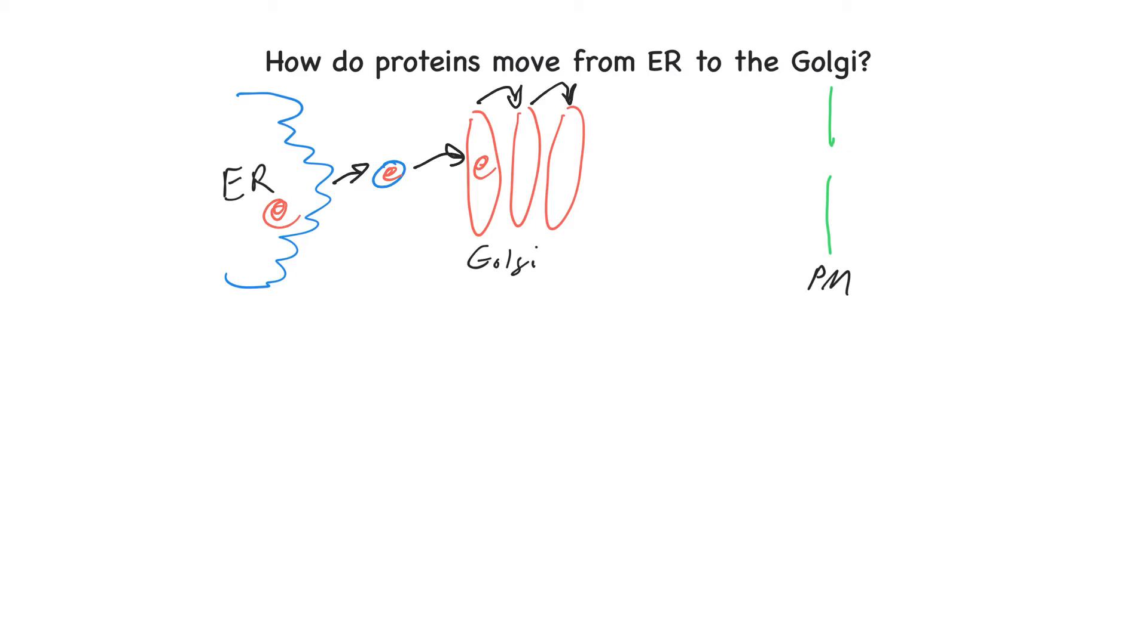And then they bud off a second vesicle or another vesicle from the Golgi that contains the protein of interest. And then that vesicle eventually, if it's ultimately a secreted protein like insulin, will then fuse with the plasma membrane, dumping its contents into the extracellular environment. So that's the gist of how things basically move through the secretory pathway. Now to break that down into molecular components, or just conceptual molecular steps.